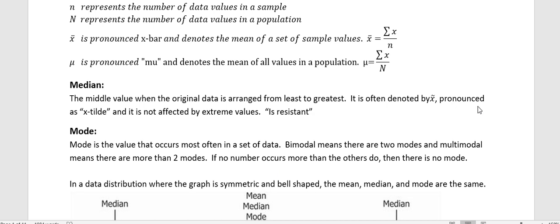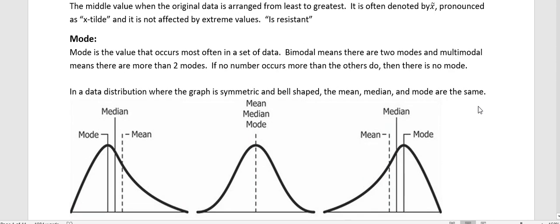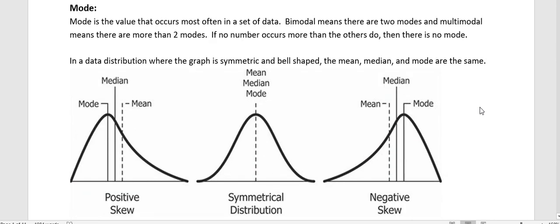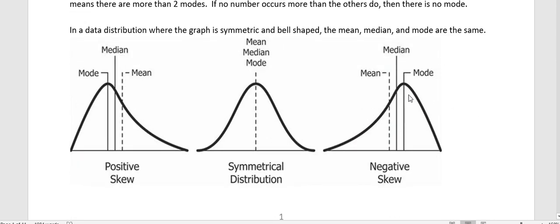In a data distribution where the graph is symmetric and bell-shaped like it is in the center here, then the mean, median, mode are the same. So when we have a bell-shaped curve or normal distribution we say that's a symmetrical distribution. Look how we took a dotted line down the middle, it looks the same on either side of the dotted line. Once we have a symmetrical distribution we know that the mean, median, mode are all equal or the same.